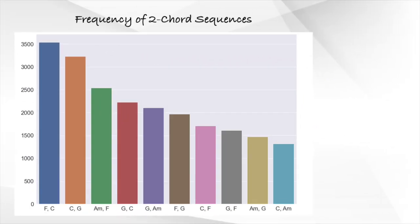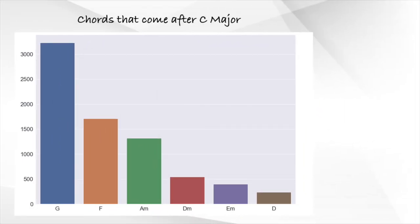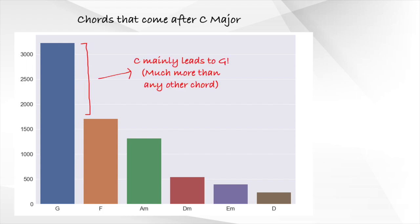Next, this graph shows the top 10 two-chord sequences that appear most frequently in all the songs. Unsurprisingly, the top 2-chord sequences are made out from the top 4 most used chords. Despite this, the graph gives us some idea of which chords tend to lead to which other chords. Here are the top 6 chords that tend to come after the C major chord, sorted from most frequent to least frequent. One interesting pattern is that the C major chord tends to lead to the G major chord much more so than any other chord.